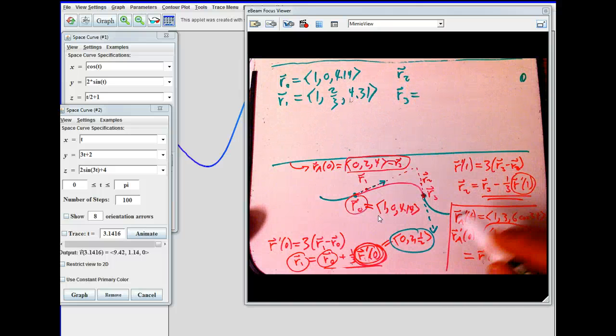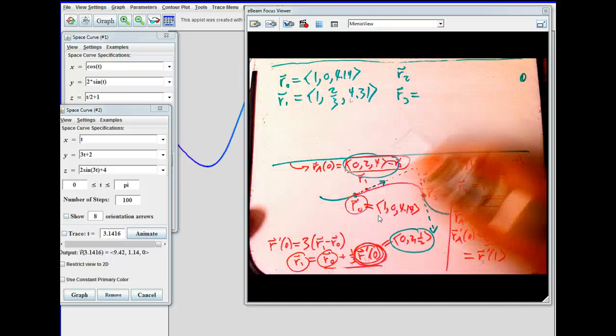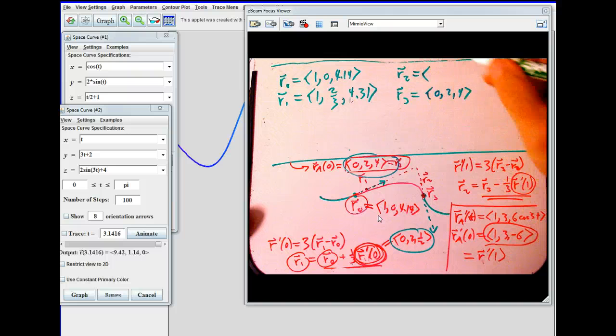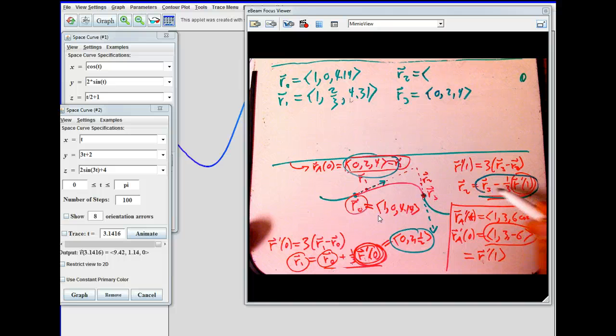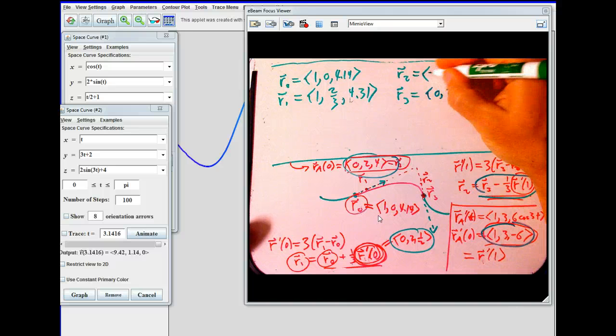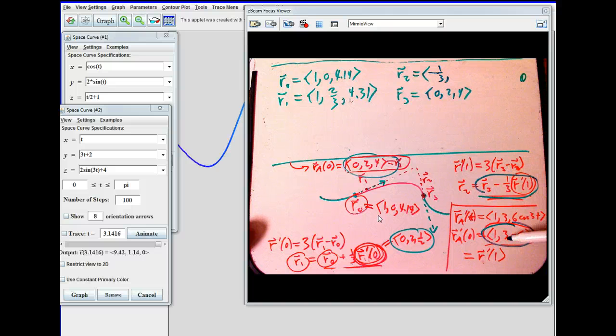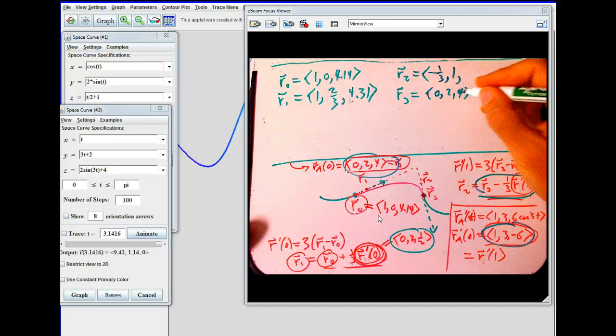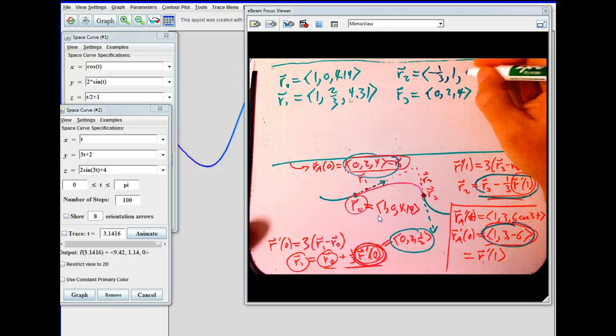R three is easier. R three is just this guy, zero, two, four. And R two is this guy minus a third of this puppy. So zero minus one third. And then two minus a third of three is one. And then four minus a third of minus six, so four plus two is six. So there's the Bézier data for the curve.